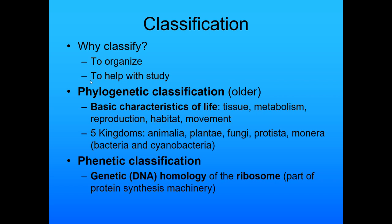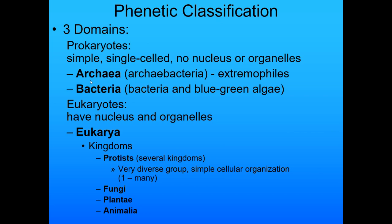These classification systems occasionally get updated as we know more. That's one of the things about scientists — when we know more, we will change our minds. We have now discovered a much better way to look at classification: we look at the genetic homology, the DNA homology of the ribosome, which is part of the protein synthesis machinery and is highly conserved from bacteria all the way to us. Based on that, we now have a different classification called phonetic classification, where we have three domains.